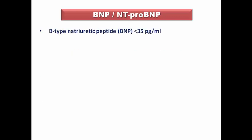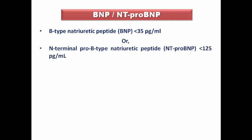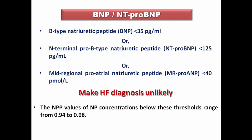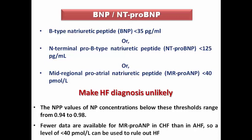For example, if BNP is less than 35 pg/mL, or NT-proBNP is less than 125 pg/mL, or midregional pro-atrial natriuretic peptide is less than 40 pg/mL, then heart failure diagnosis is unlikely. The negative predictive values for these concentrations below the threshold range from 0.94 to 0.98 — a high negative predictive value. There are fewer data for midregional pro-ANP in chronic versus acute heart failure, so we use an empirical level of less than 40 to rule out heart failure.